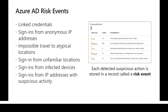There are different risk events associated with a user account. Azure AD Identity Protection detects all those risk events and shows what the risk is and the risk level for each risk category, along with the count of each detected risk.